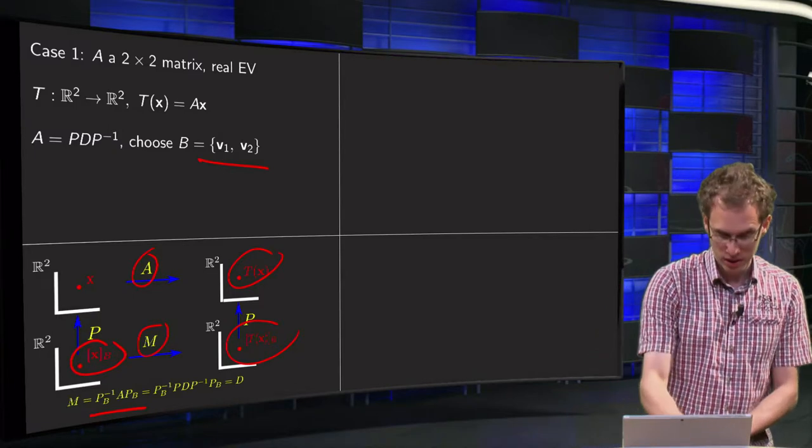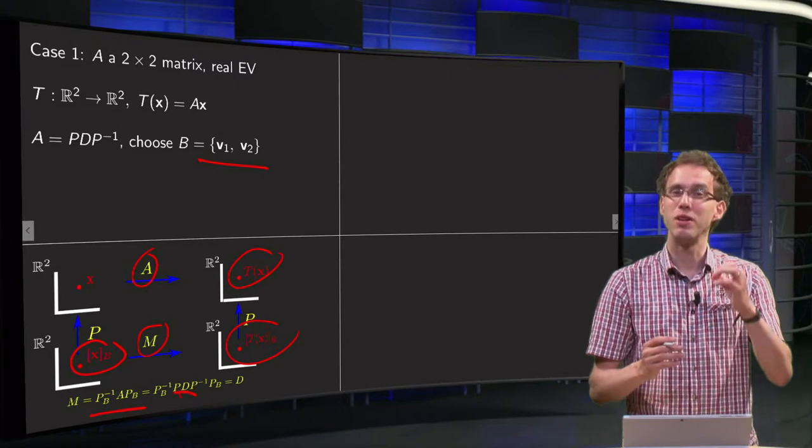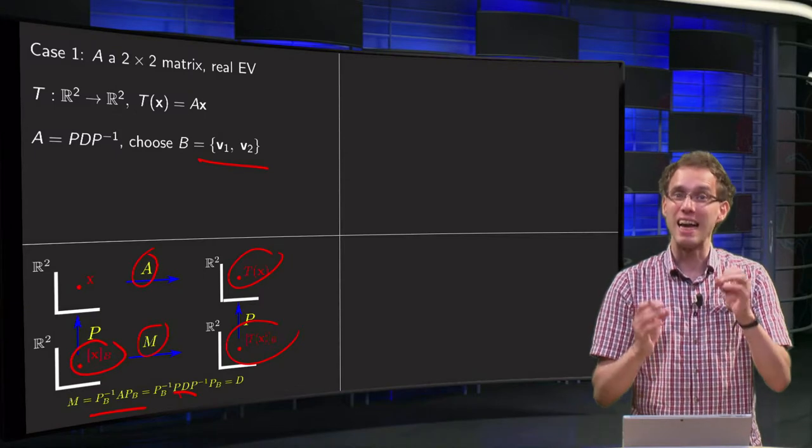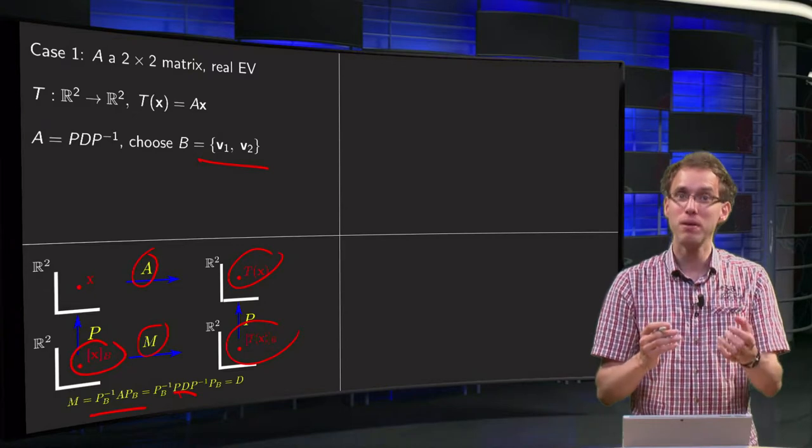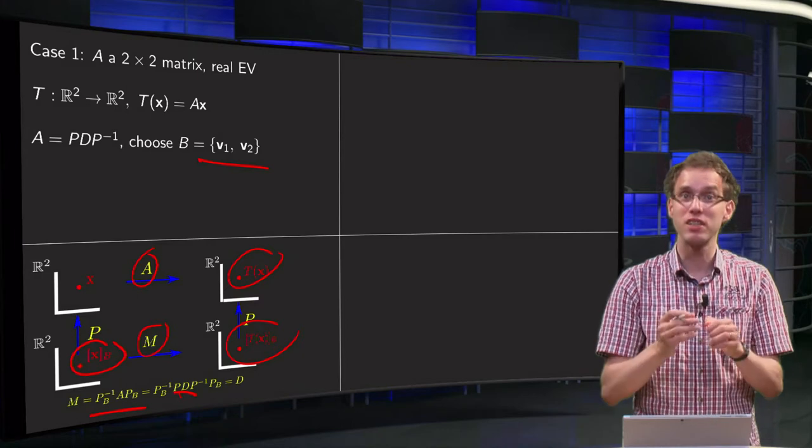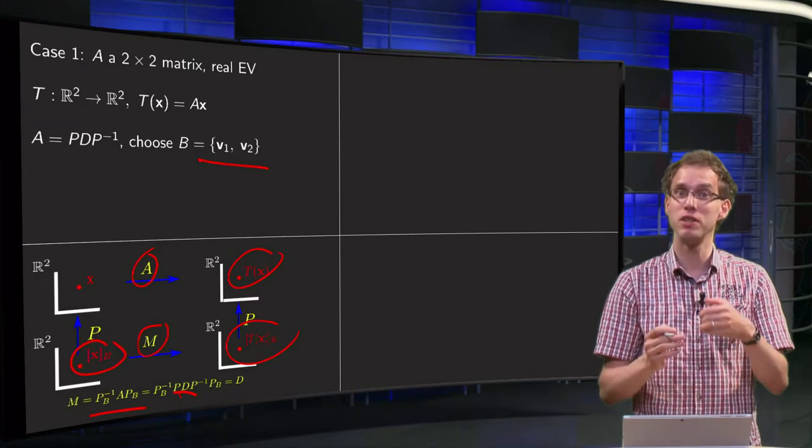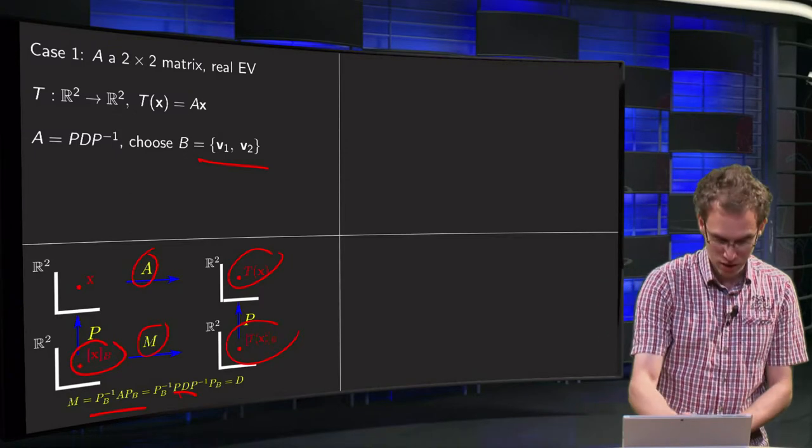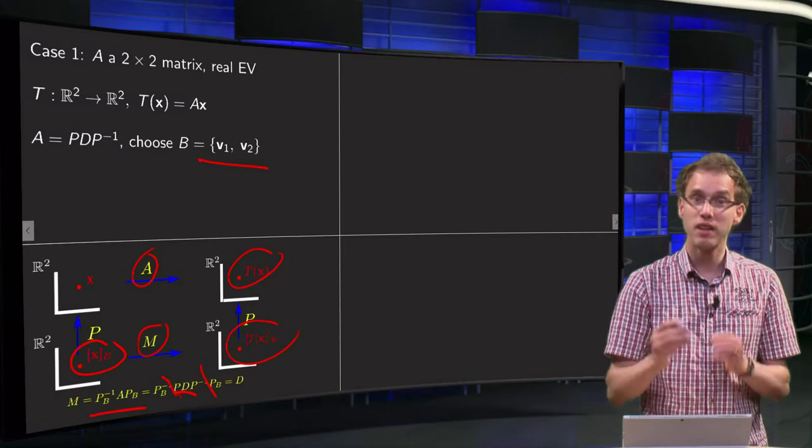We also know that A equals P times D times P inverse. Now we made a choice: we chose as our basis exactly the eigenvectors. So our P matrix consists of the eigenvectors, and our P_B matrix also consists of the eigenvectors—they are the same matrices. That means P_B inverse times P cancels out, as does P inverse times P_B. We're left with the diagonal matrix D.